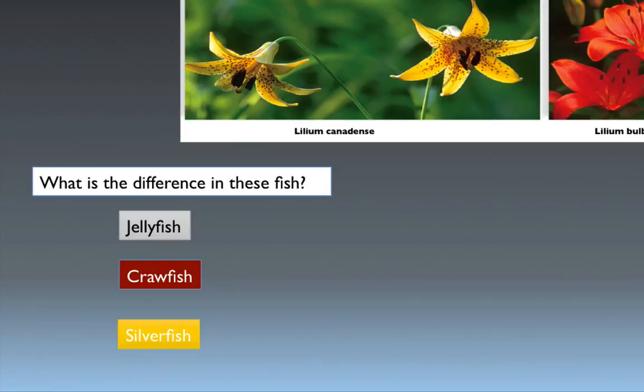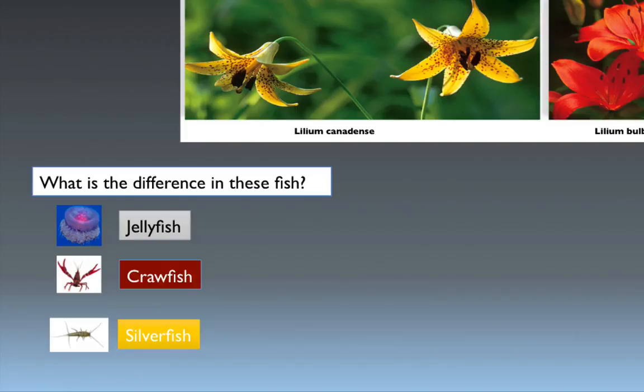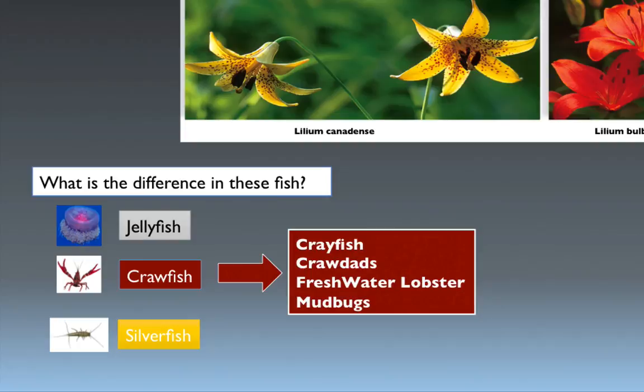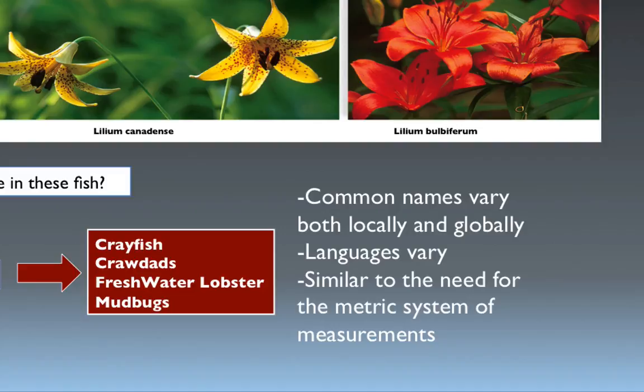Another example: what is the difference in the fish you see here — jellyfish, crawfish, and silverfish? None of them are actually fish. The jellyfish is a cnidarian; the crawfish and silverfish are arthropods — the crawfish is a crustacean and the silverfish is an insect. Even the crawfish alone has multiple names: crayfish, crawdad, freshwater lobster, or mud bug. Scientific names help us figure out which one is which, since common names vary both locally and globally.